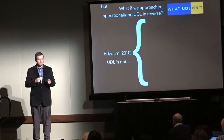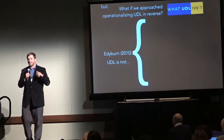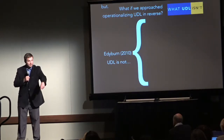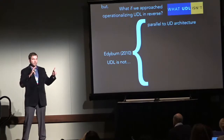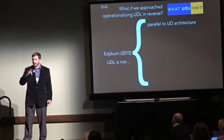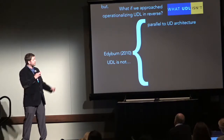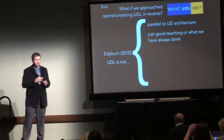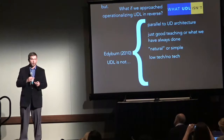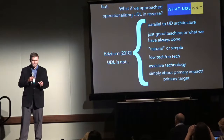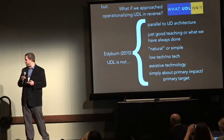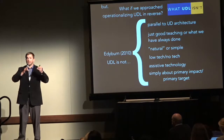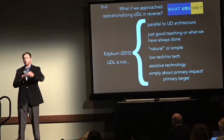Here I tip my hat to Dave Eddyburn, because in his 2010 paper — his 10 propositions — seven of them were framed in the negative, saying: UDL is not this. He said UDL is not parallel to UD architecture. It's not just good teaching or what we've always done. It's not natural or simple. It's not low tech or no tech. It's not assistive technology. And it's not simply about the primary target — in other words, we're not just focusing on Jimmy with dyslexia. We're focusing on changing the environment, and Jimmy will benefit from that as well as his peers.